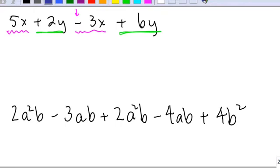So now when I combine them I have to combine the ones that are the same. In the first one I'm going to do the pink ones: 5x minus 3x is 2x, and 2y plus 6y is 8y.